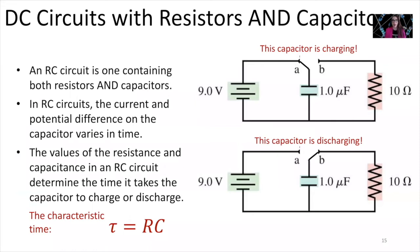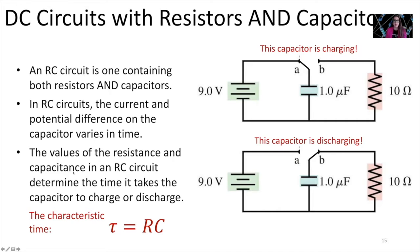In lab we have already experienced resistor-capacitor circuits, and we are going to review them here and learn a little bit more about them. A resistor-capacitor circuit, or an RC circuit, is one that contains both resistors and capacitors. In these types of circuits — sometimes called DC RC circuits — DC means direct current coming from a battery. In RC circuits the current and the potential difference on the capacitor vary in time.